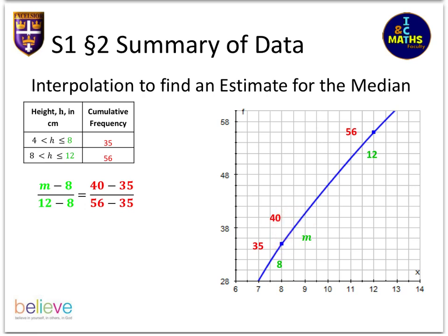What we do is we compare the change in height, so the distance between this 35 and 40, where the median value would live, and we compare that to the whole height of that particular group. And also we can have a comparison here of the width change. What's the comparison between that distance and the whole width of the group?